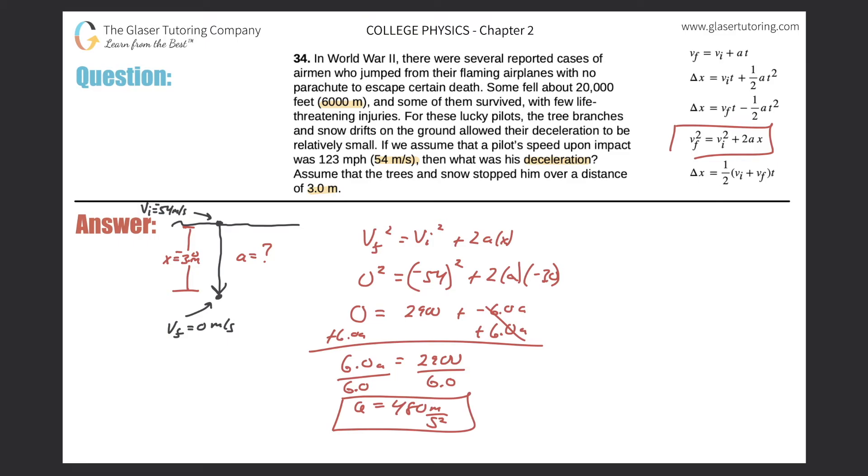Now, you might say, well, wait a minute. Why isn't that negative? I thought it's decelerating. So why is it not negative? Well, it is decelerating. But the thing is, the acceleration actually of the object is pointing upwards. Since the object, since unfortunately the individual is traveling downwards.